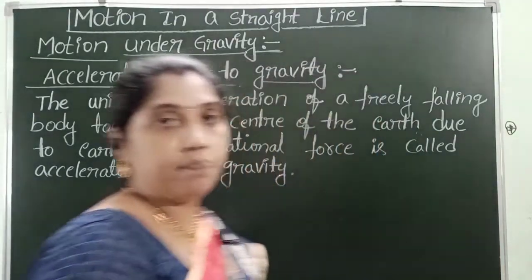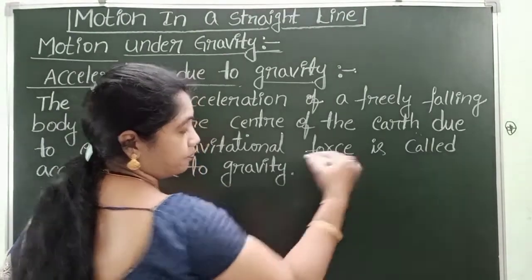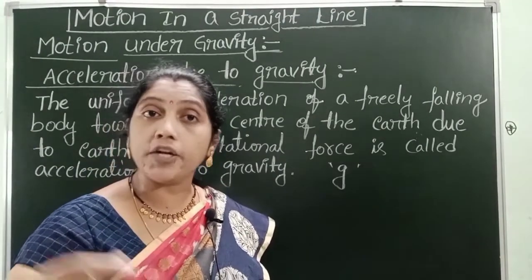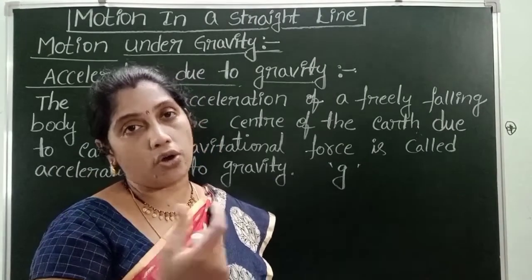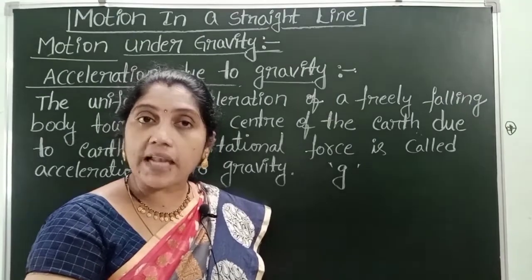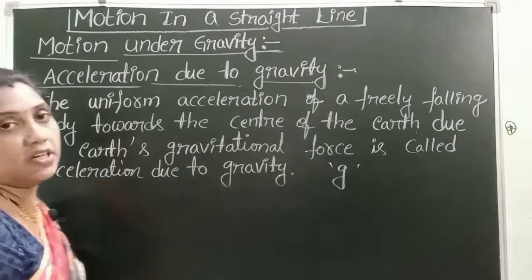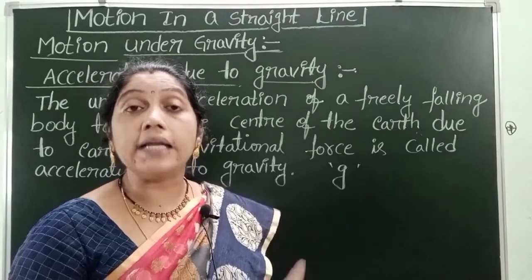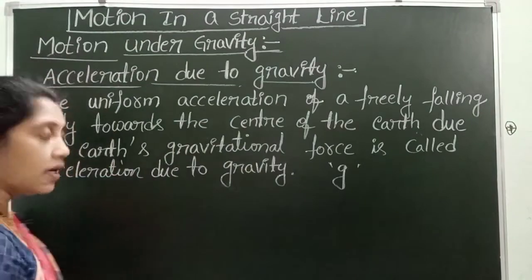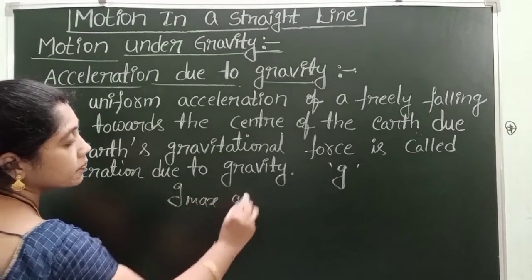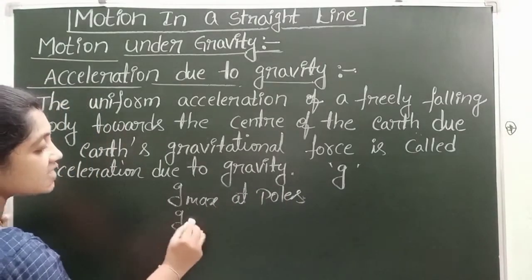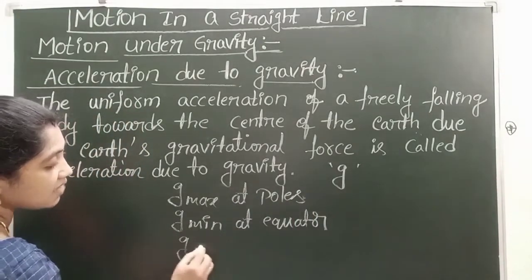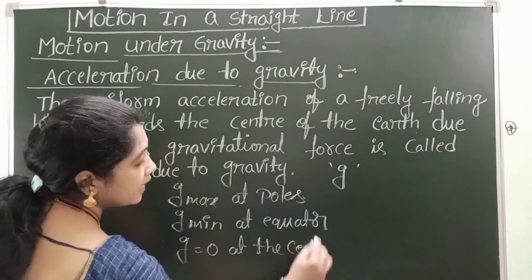Acceleration due to gravity is denoted with the letter G. The value of G is not constant — it varies from place to place, planet to planet. But at a given place, G value is constant. On the surface of the earth, G value is maximum at poles, minimum at the equator, and G equals zero at the center of the earth.